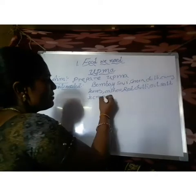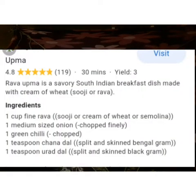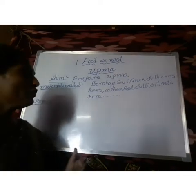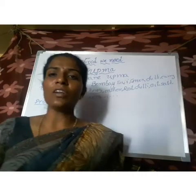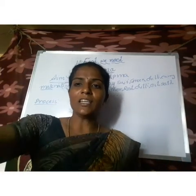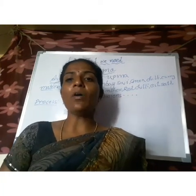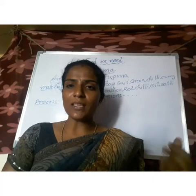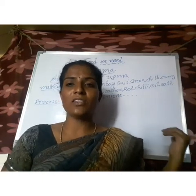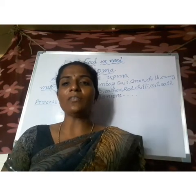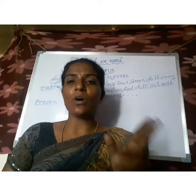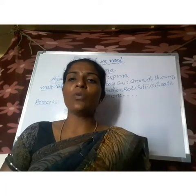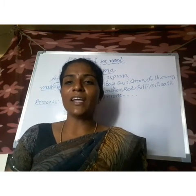Coming to the process: First, keep a pan upon the flame and pour some oil. When the oil is heated, add the onion pieces, green chilies, red chilies, and spices like jeera, urad dal, and curry leaves. After that, pour 2 cups of water. When the water is boiling, add the Bombay suji to that water. Stir it well, and after some time a very tasty upma is ready.